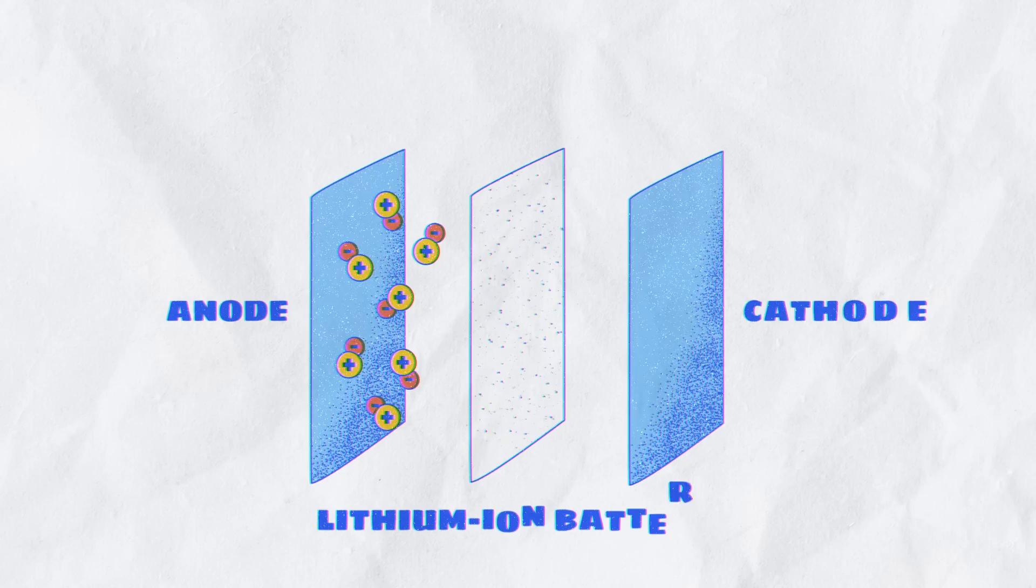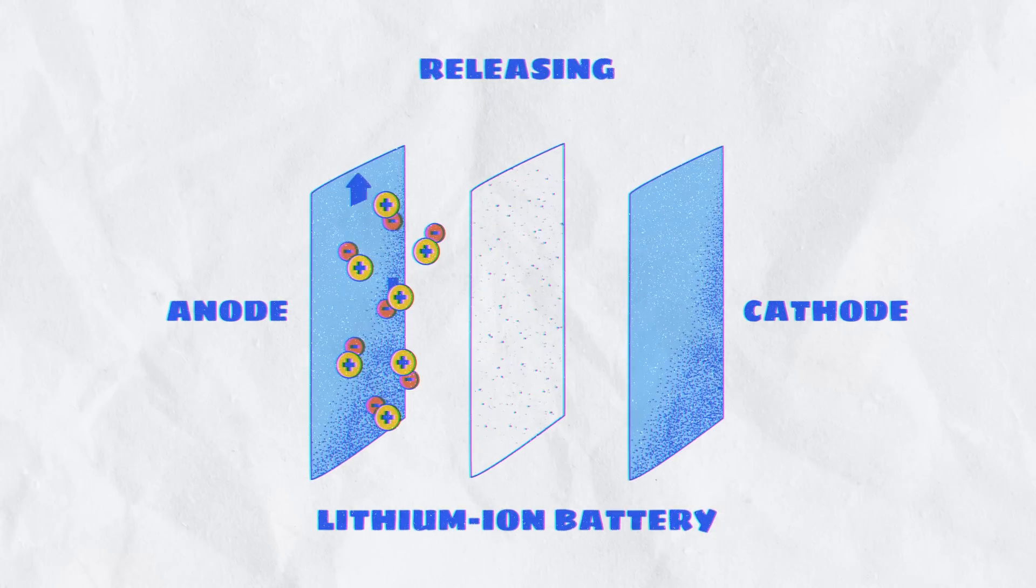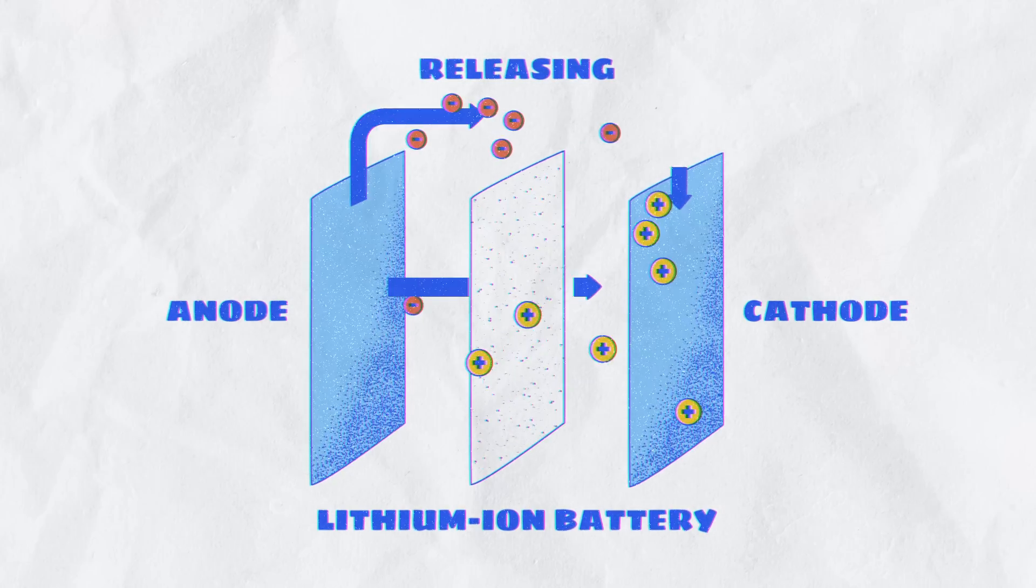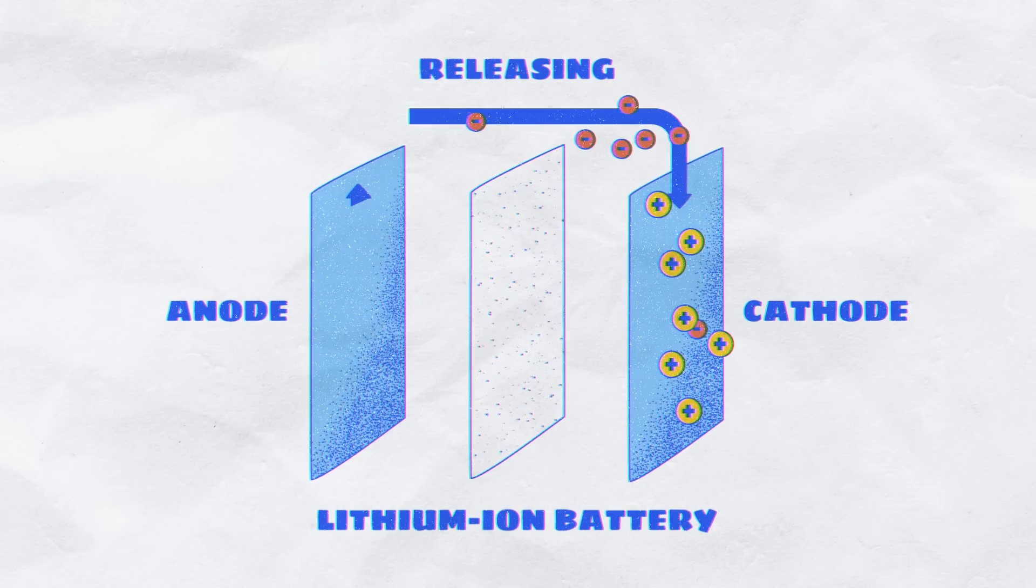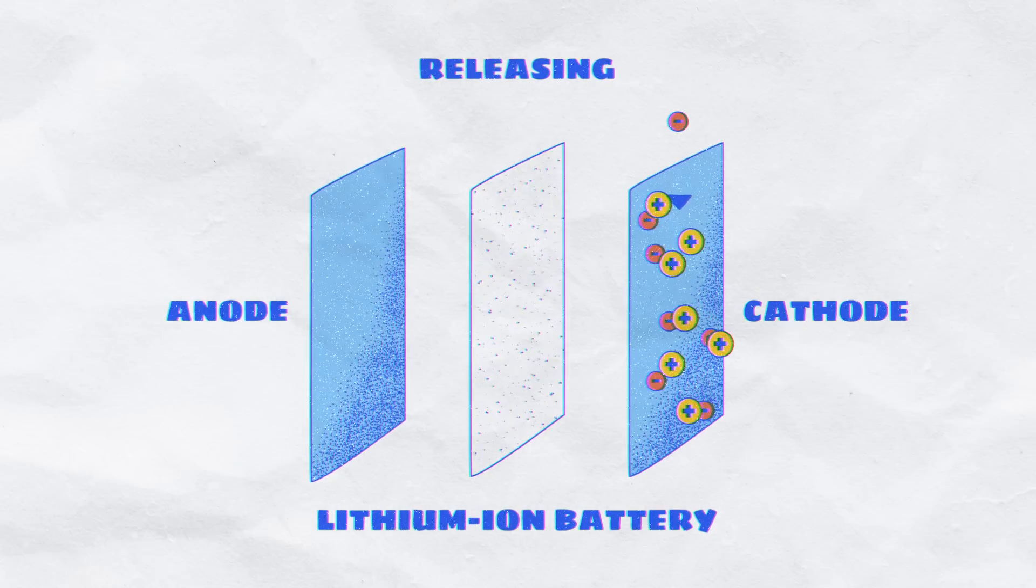They store energy in lithium-ions. To release the energy, the ions are separated from their electrons, then rejoined at the other end of the battery as a new molecule with lower energy.